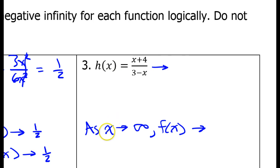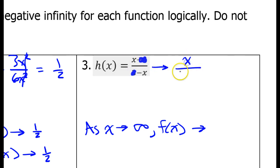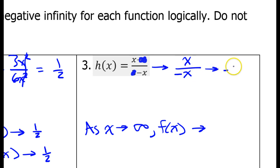Looking at number 3, as x approaches infinity, what happens to the function? As x approaches infinity, these constants are going to quickly become irrelevant because they are not changing. So the function is going to approach x over negative x. Since we're approaching infinity, x is not going to be zero, so x over negative x is going to be negative 1. So f of x will approach negative 1.